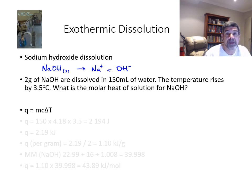If 2 grams of sodium hydroxide is dissolved in 150 mL of water, and we're told that the temperature rises by 3.5 degrees Celsius, then we can calculate the molar heat of solution for the sodium hydroxide. The formula that we want to use is this one, the mcΔT formula.